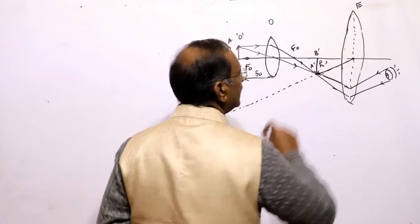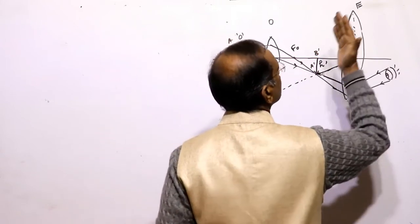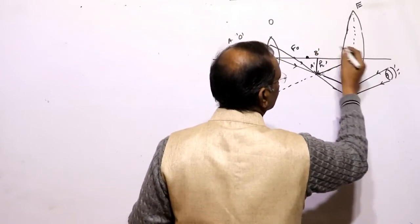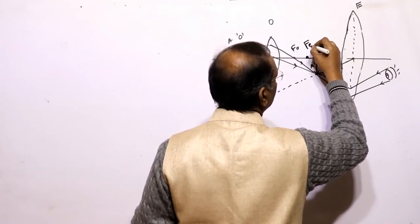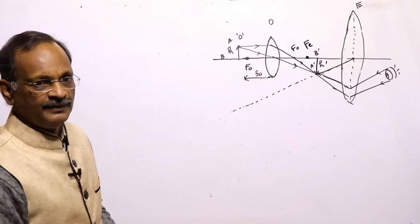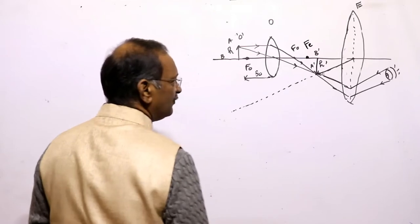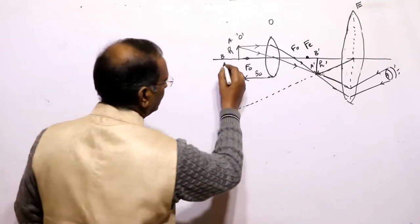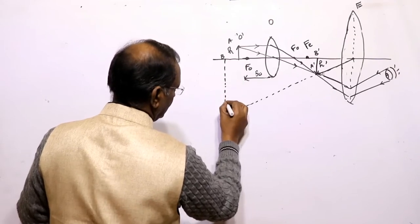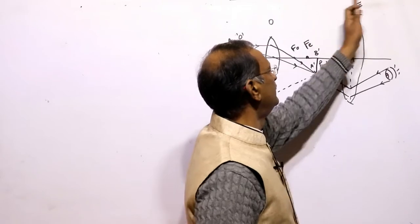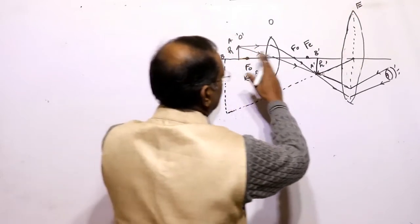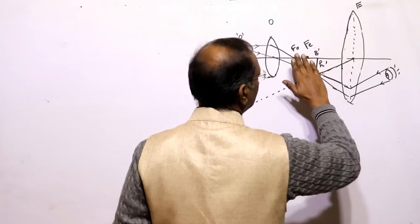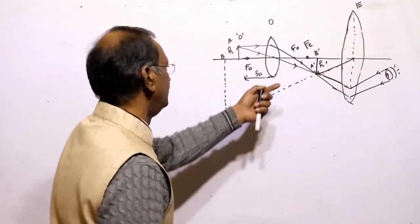The image formed by the objective lens is real and inverted. This real inverted image serves as the object for the eyepiece. The eyepiece is so adjusted that this image falls within the focal length of the eyepiece. When an object is kept within the focal length of the eyepiece, a magnified virtual image is formed on the same side. Thus the eyepiece behaves as a simple microscope, and we get an enlarged final image.